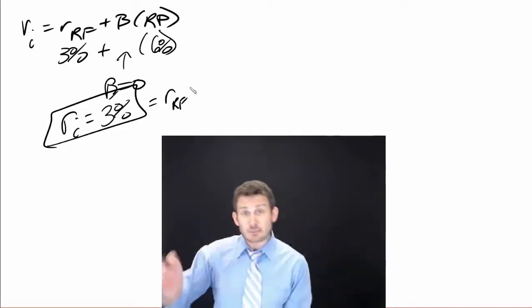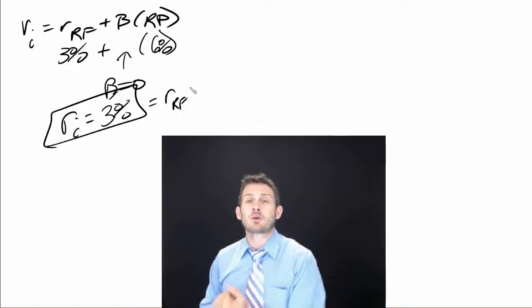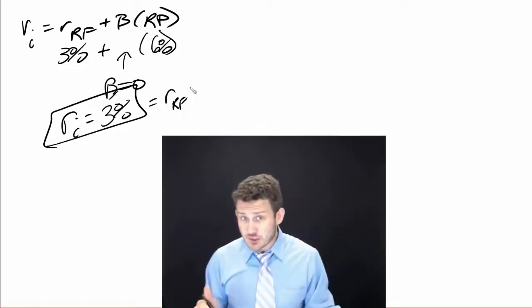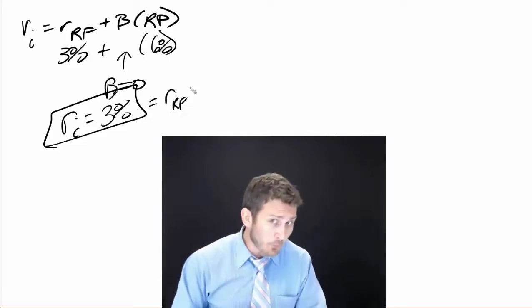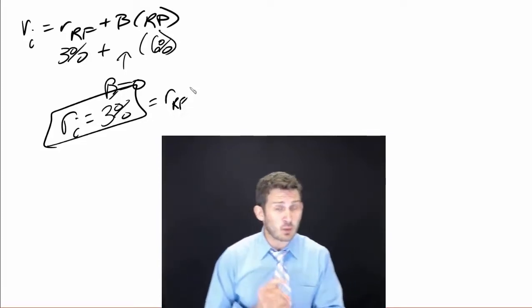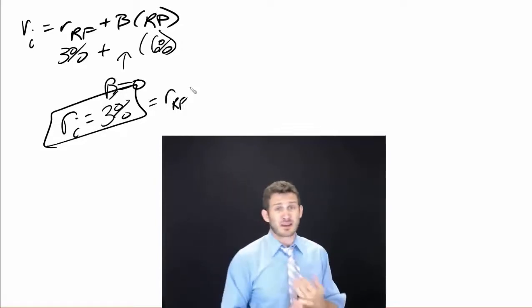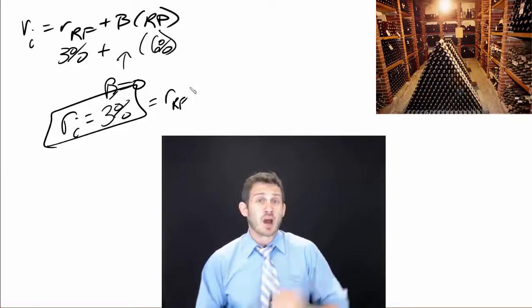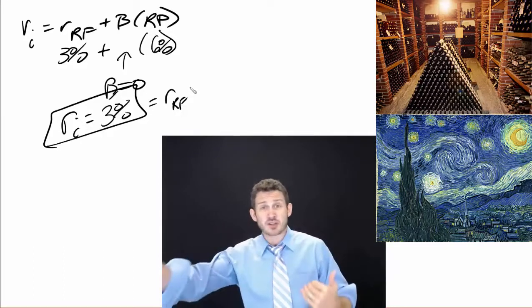Because multiplying anything by zero means it's zero, so that return is just the risk-free rate. This creates complications because there are a number of things not highly correlated with the market - like fine wine, fine art, automobiles - things that sometimes sell at auctions.